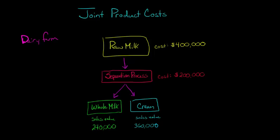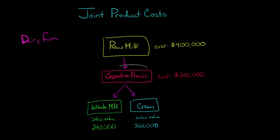The cost of maintaining the dairy farm and getting the cows to produce the raw milk was $400,000, and then there was a separation process to separate out the whole milk and the cream, which cost $200,000. Each of these costs we're going to refer to as joint costs.